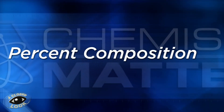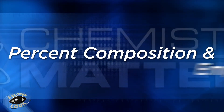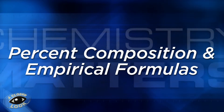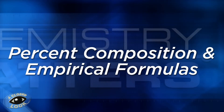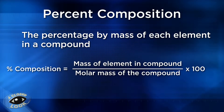In this video, we'll take a closer look at percent composition and empirical formulas. Percent composition is the percentage by mass of each element in a compound — that's why it is also called mass percent. You calculate it by finding the mass of the element in the compound and dividing by the total molar mass of the compound times 100. You do this for each element in the compound, and then you should have mass percents for each element.